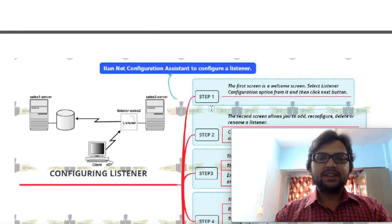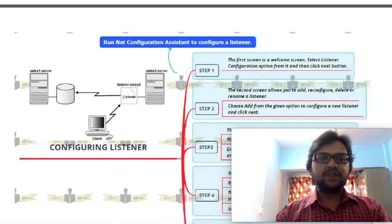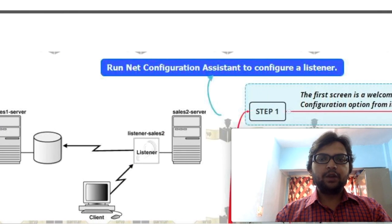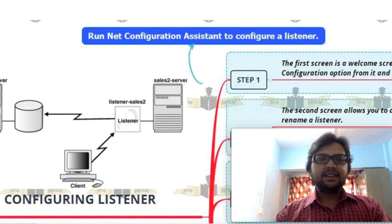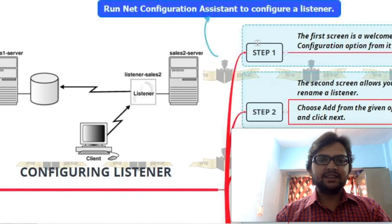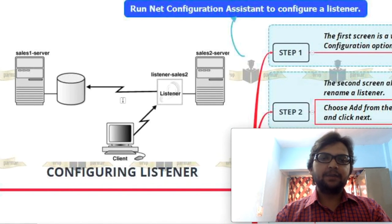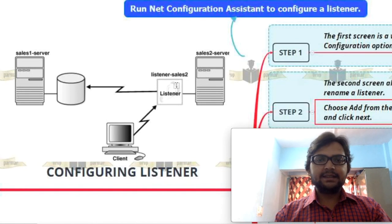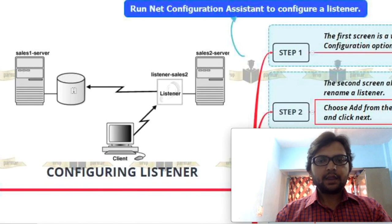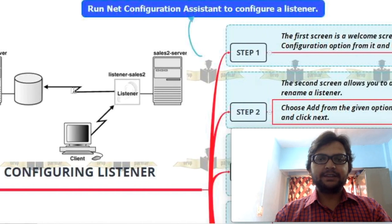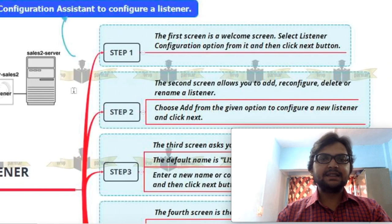One of the most important parts is how to configure a listener. First, we have to run Net Configuration Assistant to configure a listener. You can also add a diagram: this is our client, this is our listener which redirects our request to the server, and this server in turn redirects the request to the database server.